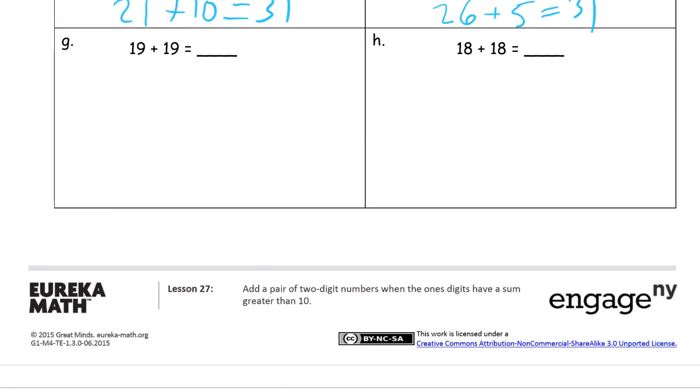19 plus 19. And for this one, I'm going to draw it. 1, 2, 3, 4, 5, 6, 7, 8, 9. And then, I need 1, I just need 9 more ones for the other 19. 1, 2, 3, 4, 5, 6, 7, 8, 9. And 10 makes 19. So, there's a 10. I have 3 tens, that's 30. Plus 8 ones, 38.